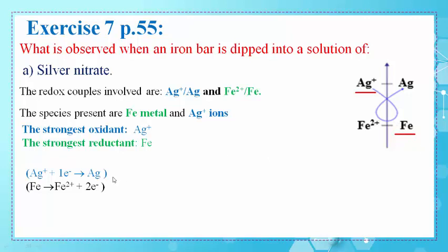The half reactions that take place are: Ag+ is reduced to Ag by gaining one electron, and Fe is oxidized to Fe2+ by losing two electrons. To write the overall reaction, we have one electron in the first reaction and two electrons in the second. So we multiply the first reaction by two and add them to get the overall reaction: 2Ag+ + Fe → Fe2+ + 2Ag.